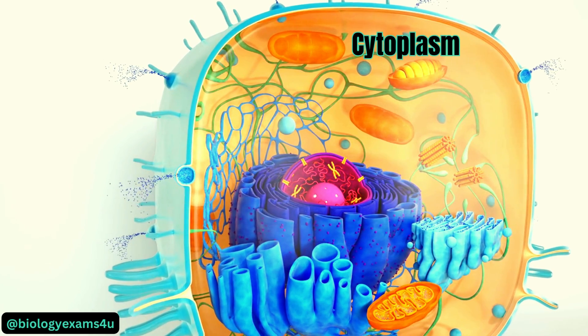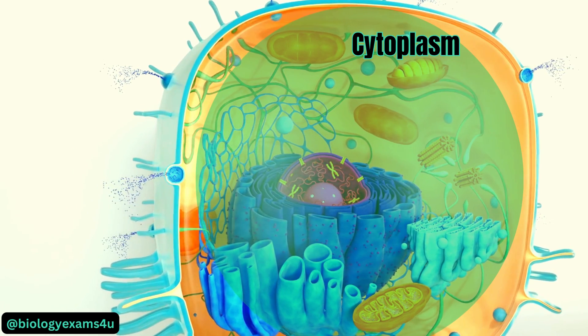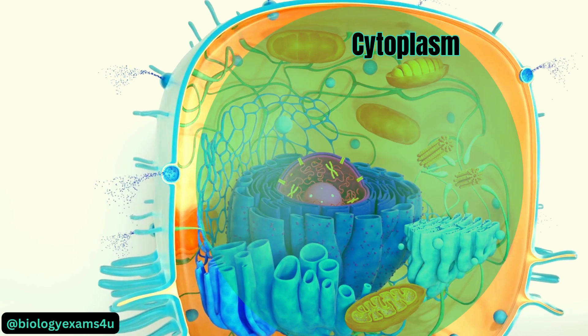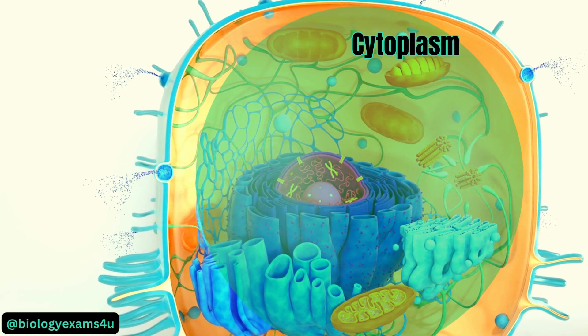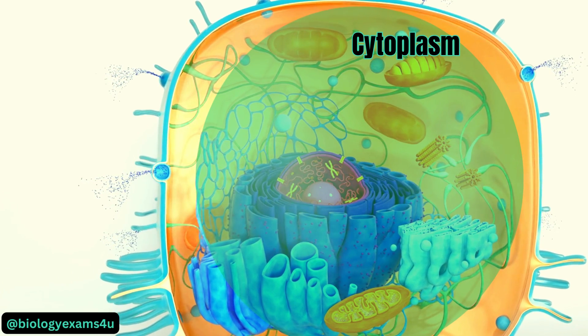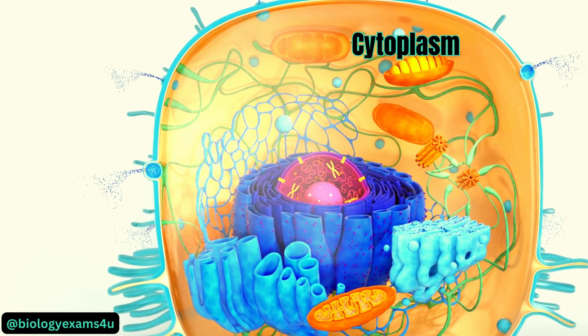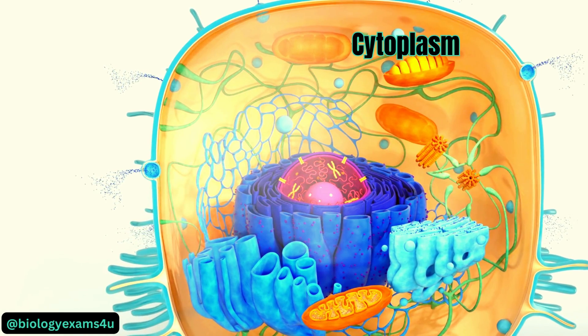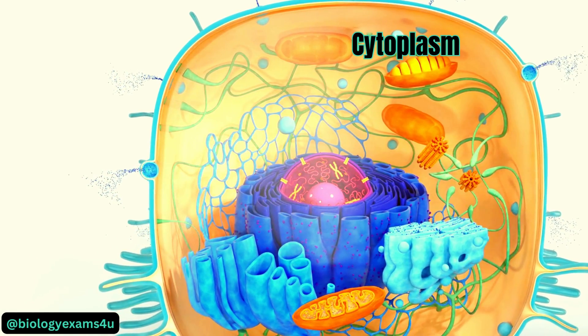Next is the cytoplasm. It is a jelly-like substance that fills the cell and contains all of the cell organelles, composed of water, salts, and various organic molecules.